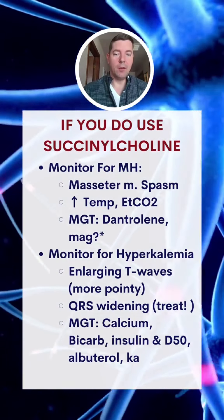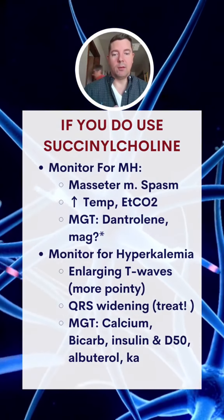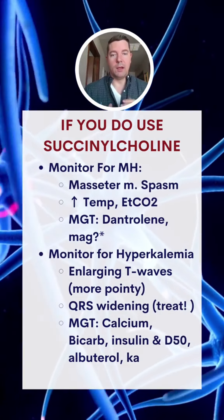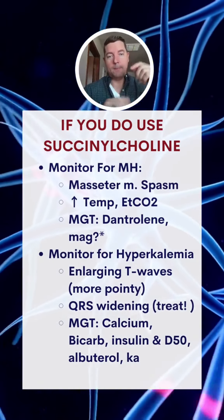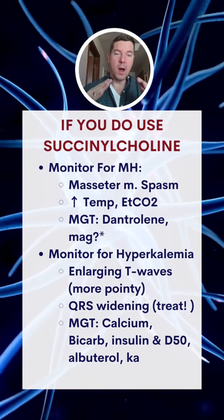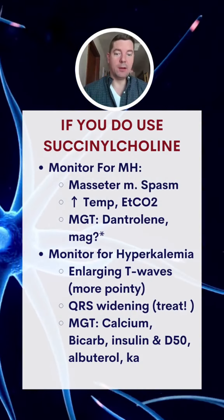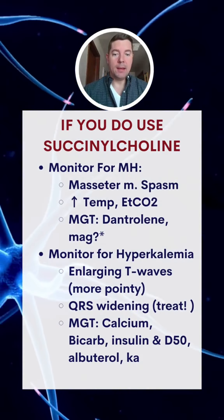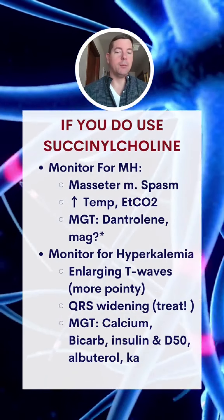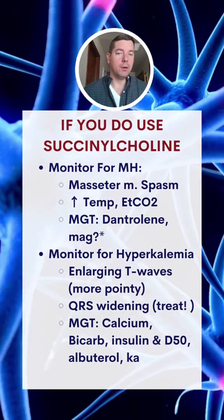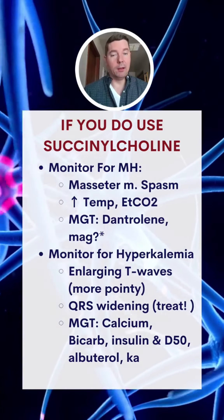The management of MH is dantrolene, and we'll cover that in another video. For the hyperkalemia issue, you'll see T-waves that are enlarged, starting to get real pointy, and then getting wider. If you haven't started treating it by then, you need to treat it at that point. Calcium, bicarb, insulin, glucose, and albuterol are what you need to help correct that — maybe even Kayexalate.